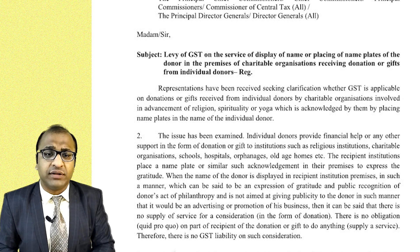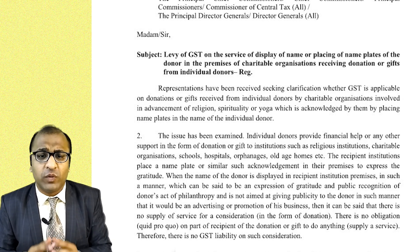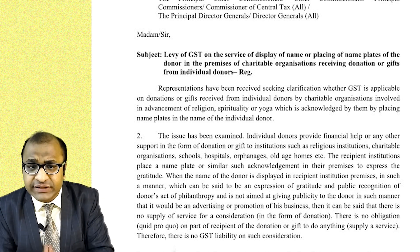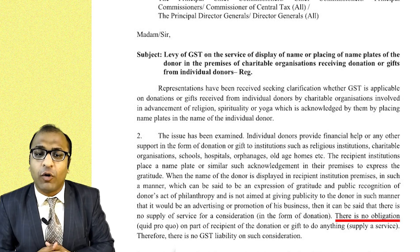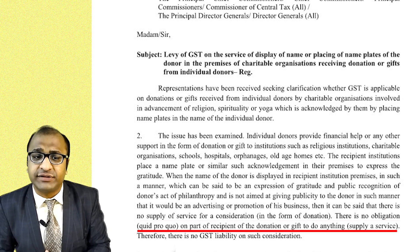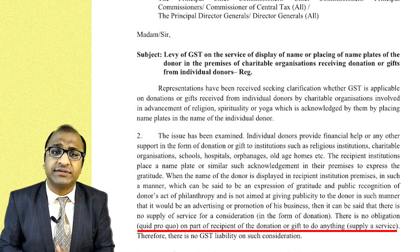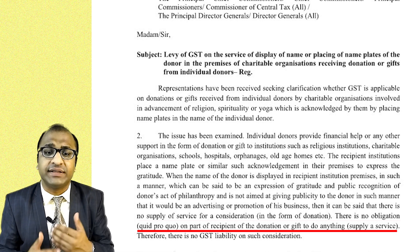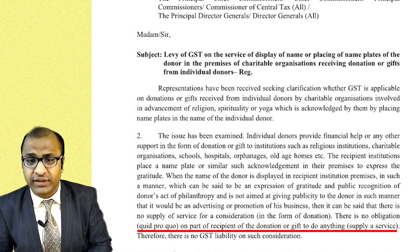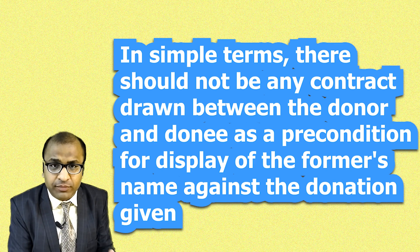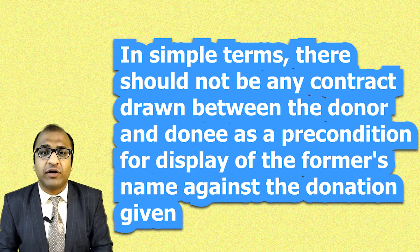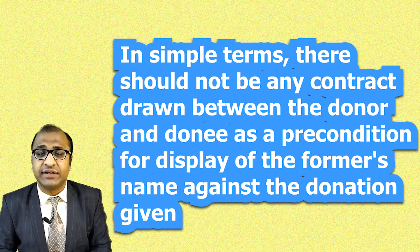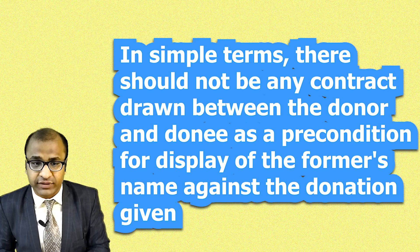The circular also specifies, which can almost be considered as another condition, that there should not be any obligation on the part of the recipient institution to provide any service. In simple terms, there should not be any contract drawn between the donor and the donee as a precondition for display of the former's name against the donation.